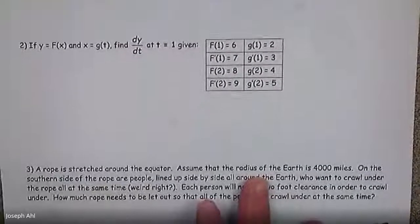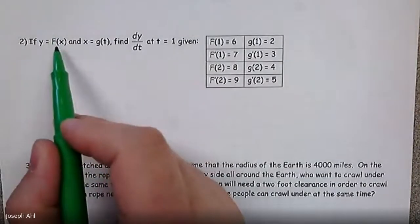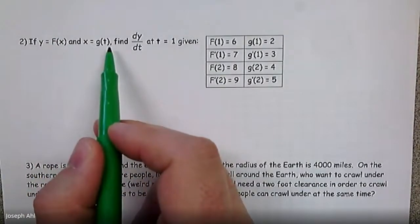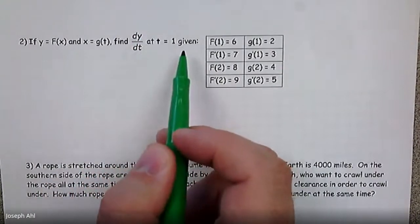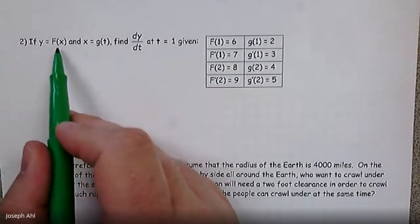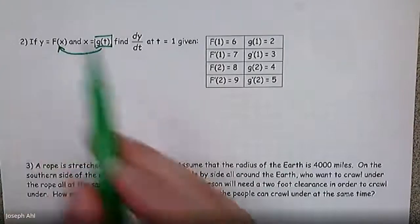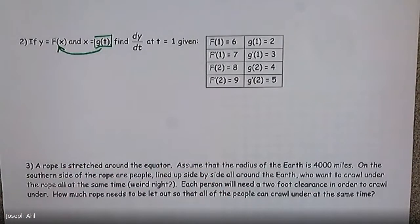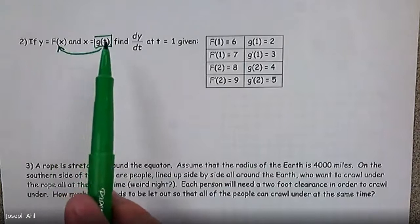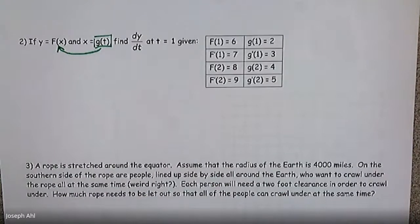Number two, we've seen tables that look like this before — we've approached this when talking about product rule and quotient rule. This one is a little unique: if Y equals F of X and X equals G of T, we want to find dy/dt at T equals one, given the information in the table. My hint is, if we have Y equals F of X and X equals G of T, think of it as F of G of T. Subbing X equals G of T in is going to help find dy/dt.